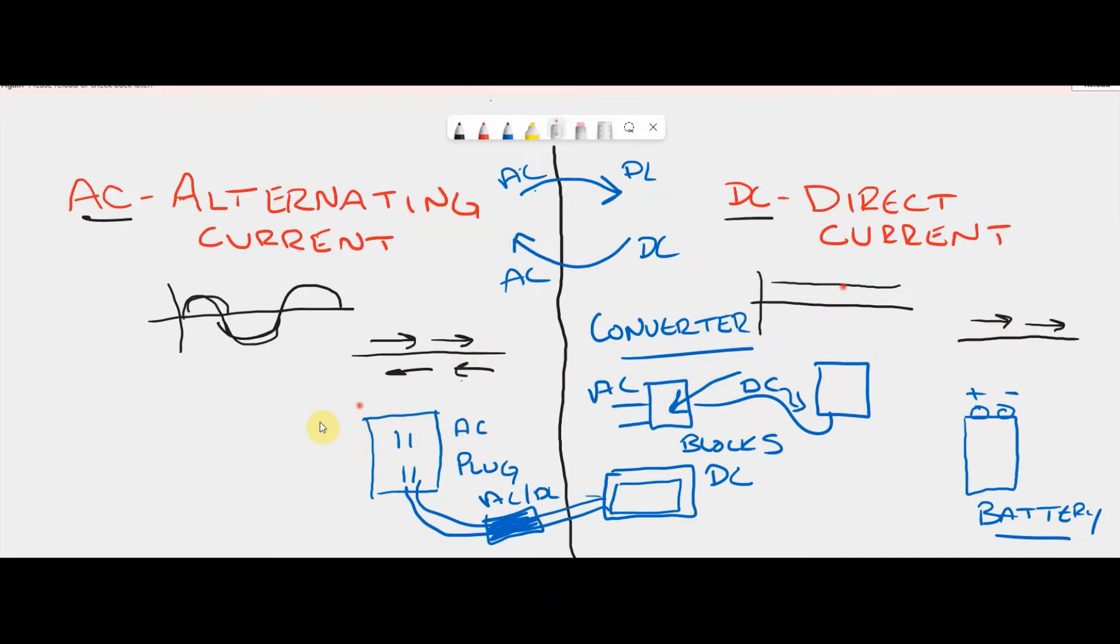An example of where we get alternating current is from a plug in your house. An example of where we get direct current is from a battery: 9 volt, AA, AAA, doesn't matter. And we use converters to go in between AC and DC, or DC to AC.